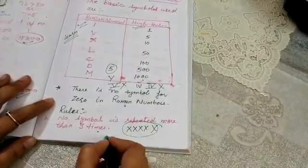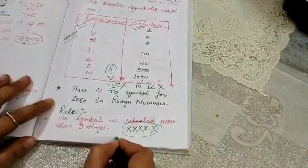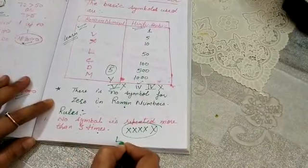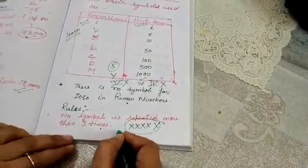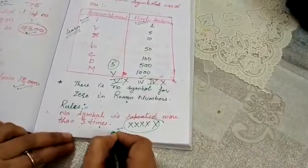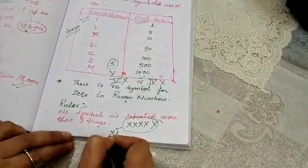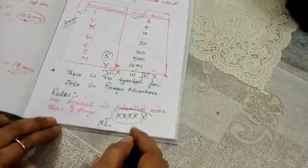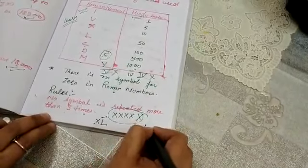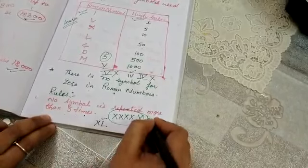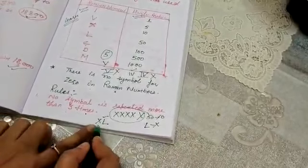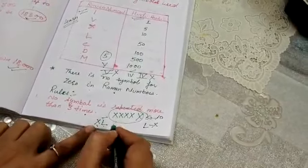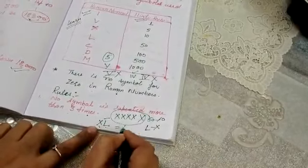To write 40, L means 50, and before L you will write X. That means you are doing a subtraction: L minus X. So 50 minus 10 equals 40. If you write X on the left side of L, it means L minus X equals 40.